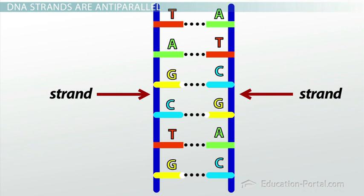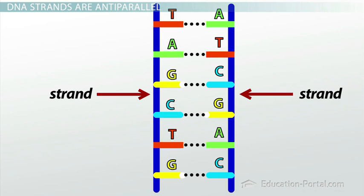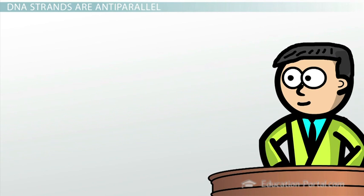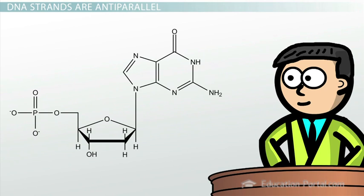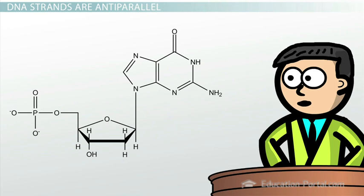Because the bases can only fit together in a specific orientation, a parallel orientation between the strands won't work. The strands must be anti-parallel, or upside down relative to one another. What do you mean anti-parallel? Well, remember that the backbone is made of phosphate groups and sugars. Therefore, each strand will always have a phosphate at one end and a sugar at the other end.